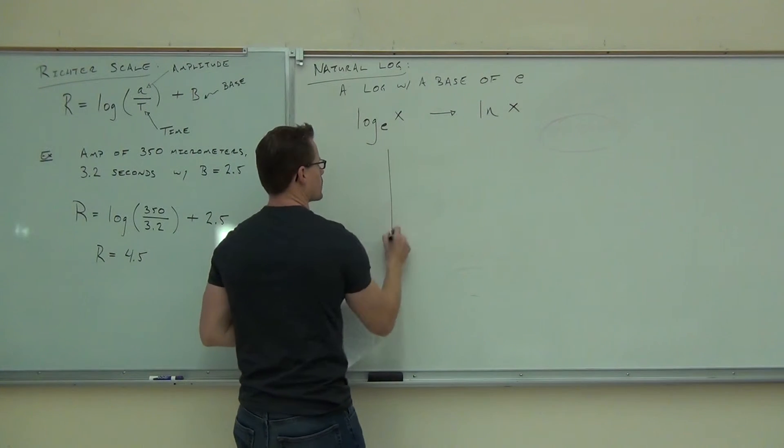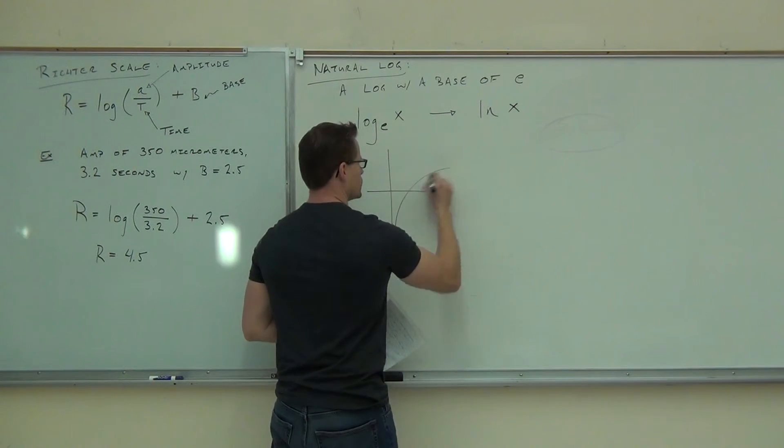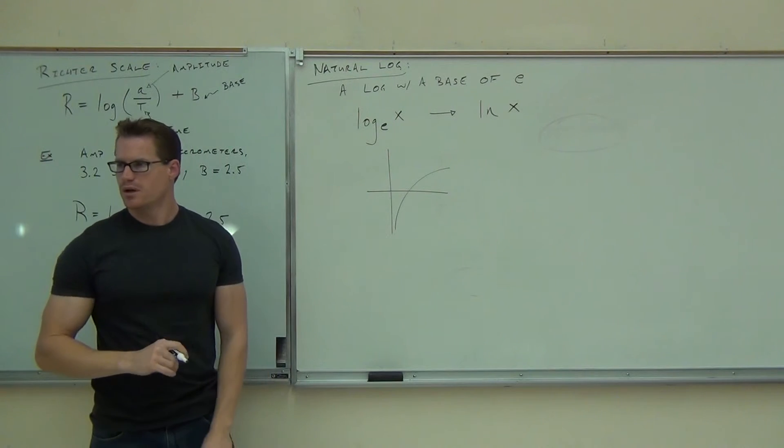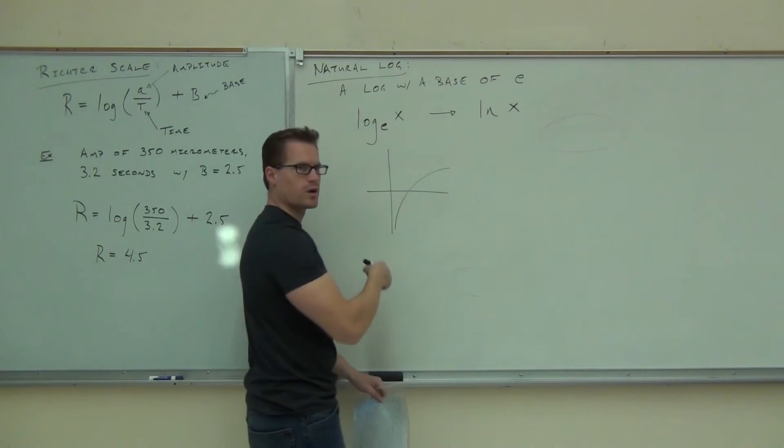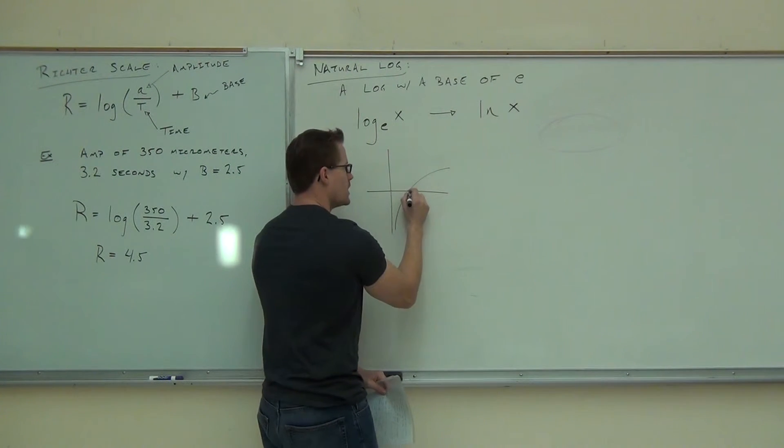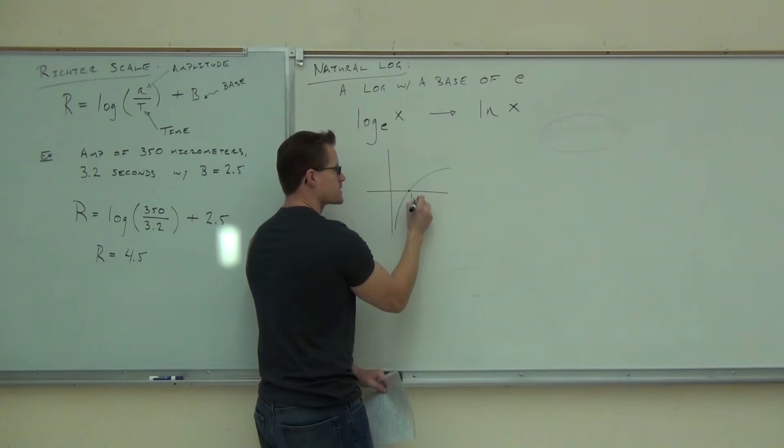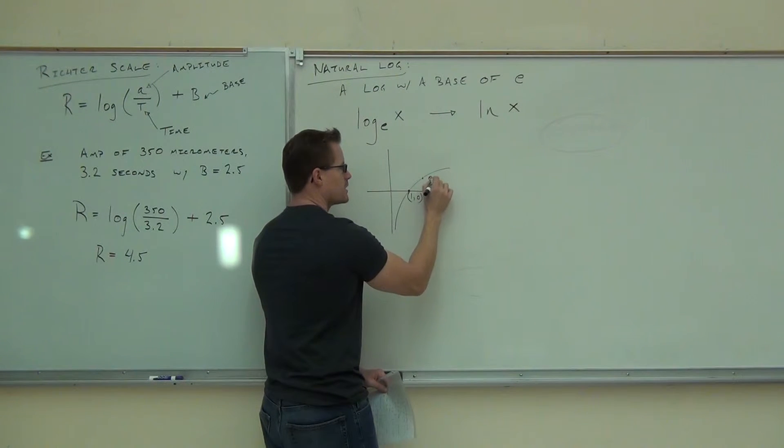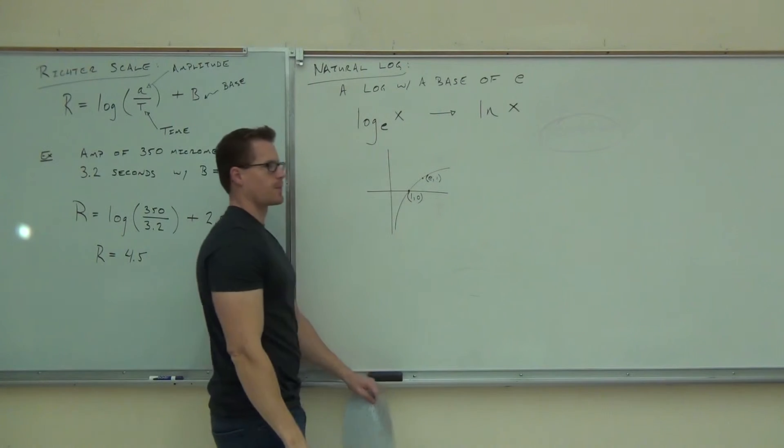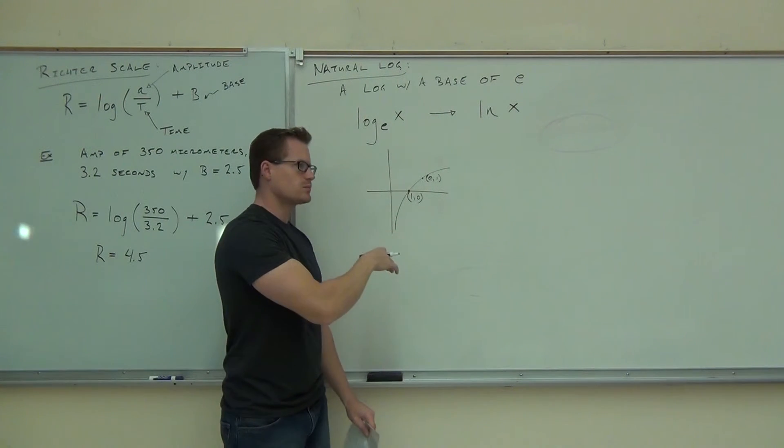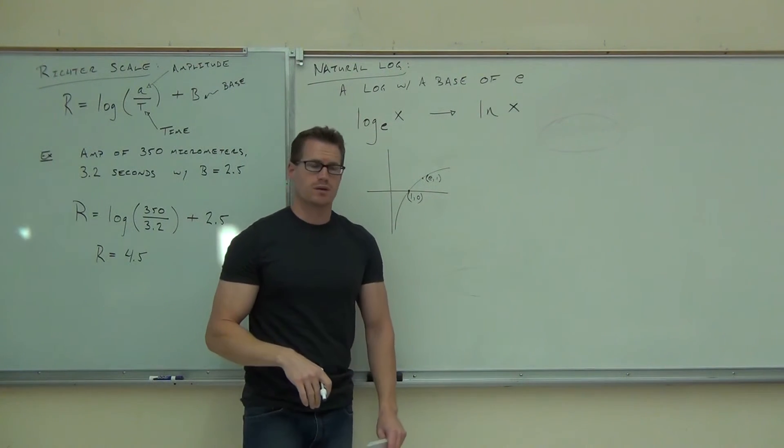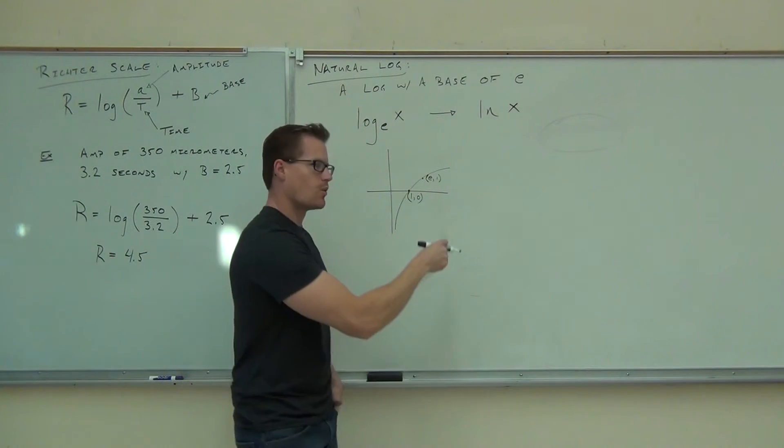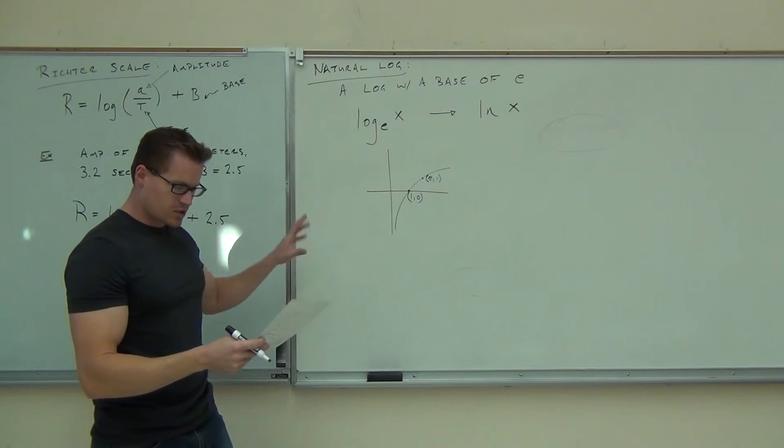You know, it's still going to look like a logarithm. It's still going to have this shape to it. Remember that shape for logarithms? It's still going to be that because the E is bigger than 1. It's 2.72 approximately. It's still going to go through the point 1, 0. And on it, it's still going to be the point E, 1. Because when you plug in E, you're going to get out 1. We'll talk about why in just a bit.